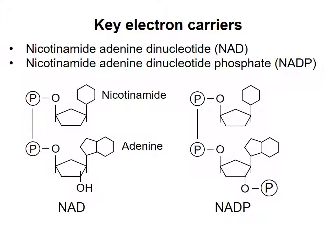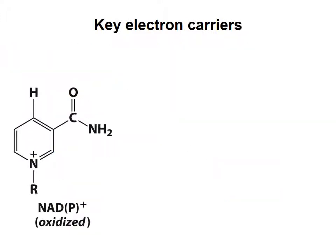These molecules can carry electrons on the nicotinamide chemical group. In its oxidized form, the nicotinamide ring carries a positive charge, and the two molecules are abbreviated NAD+ or NADP+. Addition to nicotinamide of a hydride ion (H−), which is equivalent to a proton and two electrons, neutralizes the charge. Note that reduction of the nicotinamide ring requires two electrons.